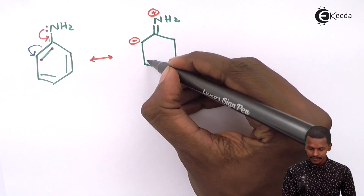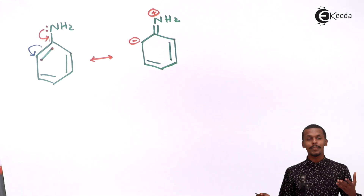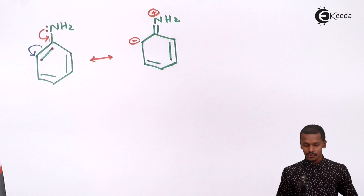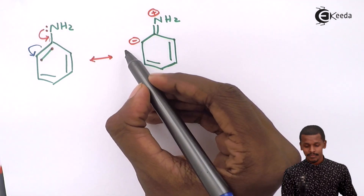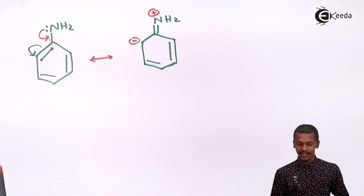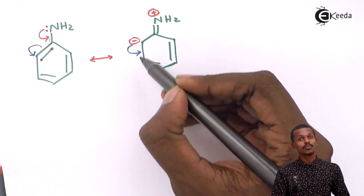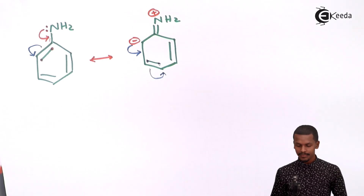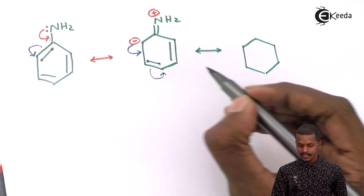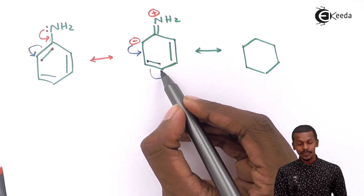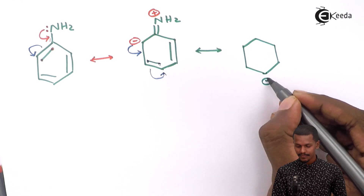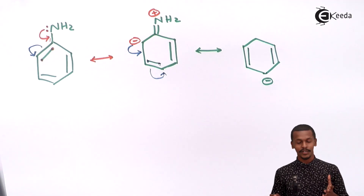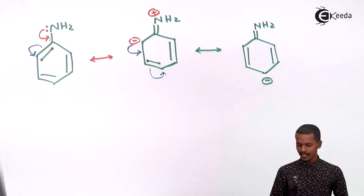The other two pi electrons remain in their own positions. But this is not a stable structure, so there will be another shifting of electrons — delocalization — as we discussed in resonance. The negative charge or the lone pair will be deposited between the next two carbon atoms, and these two electrons will shift onto the next carbon atom, making that carbon negative. There is still a double bond NH2 with a positive charge.